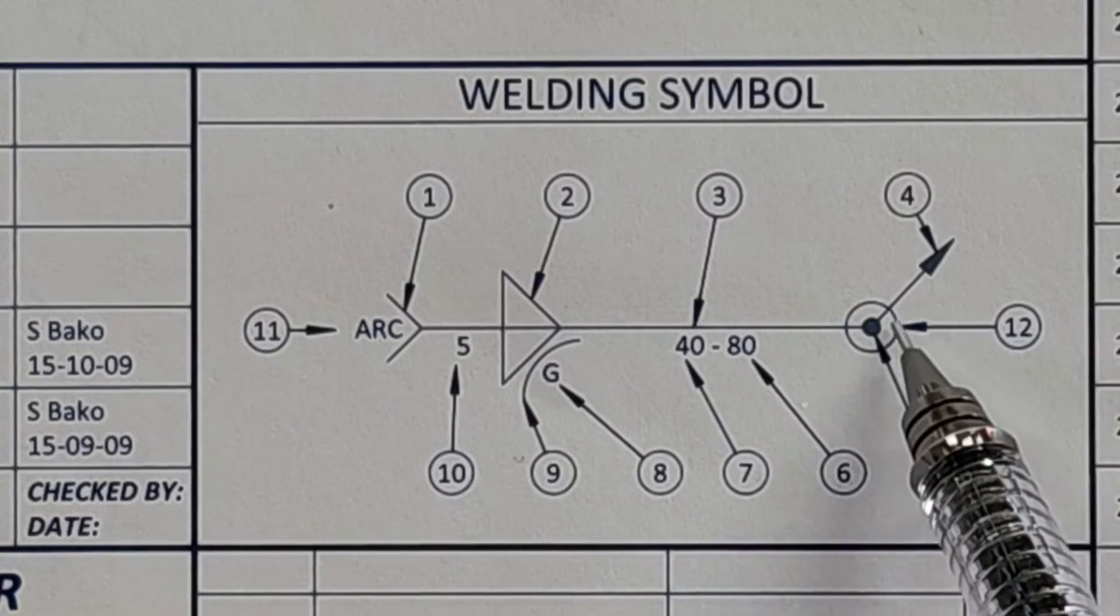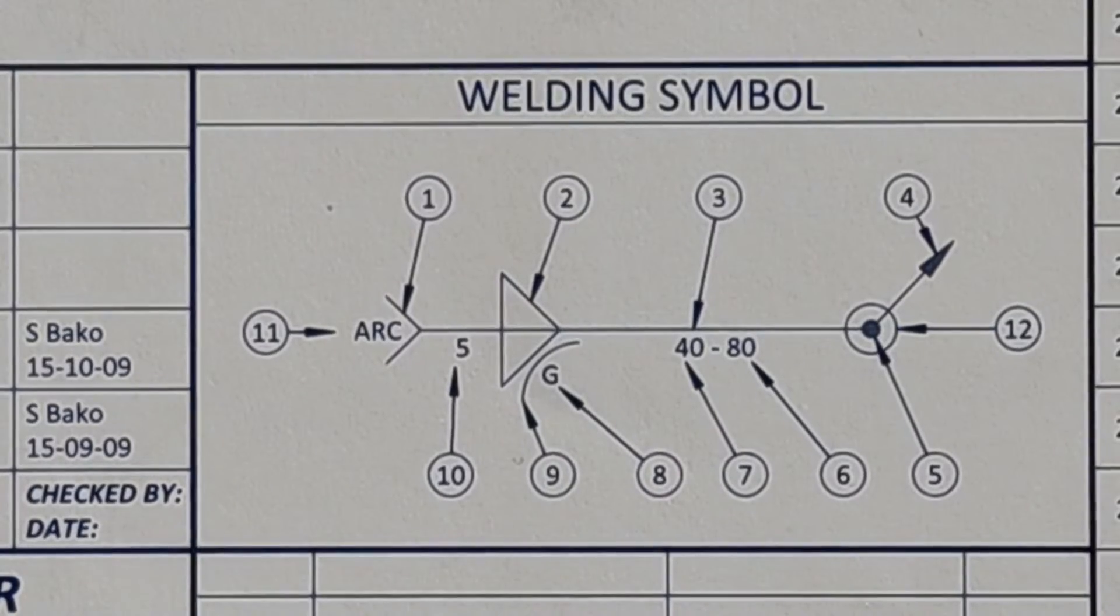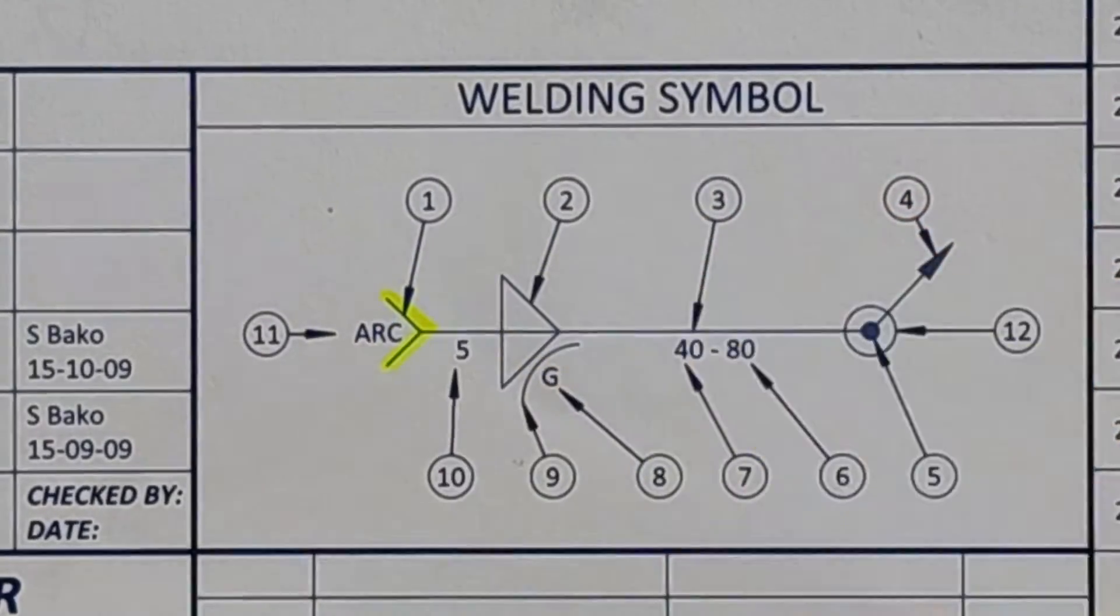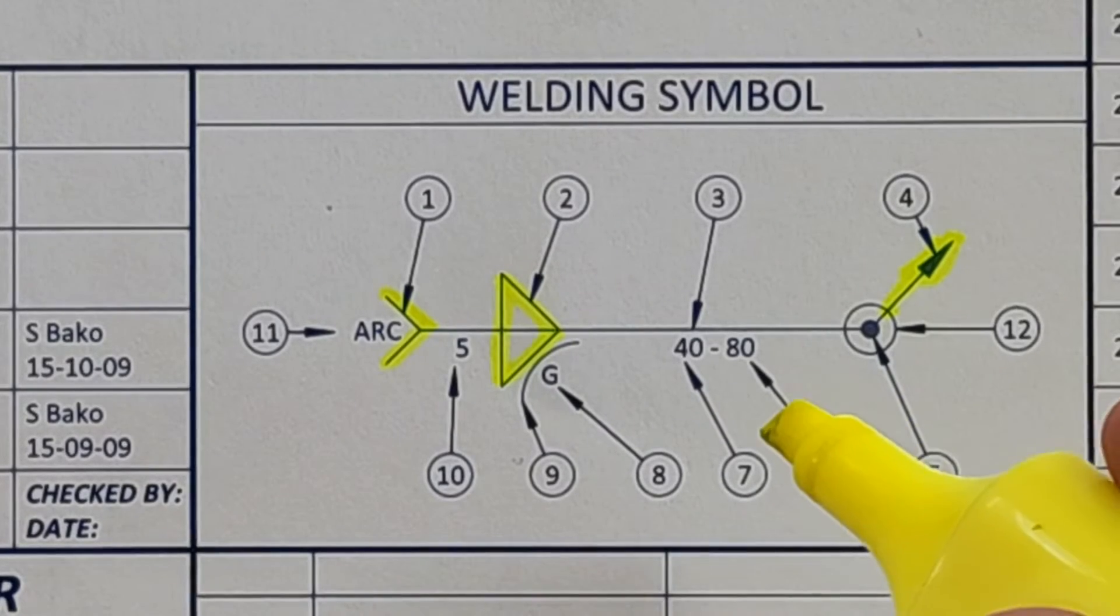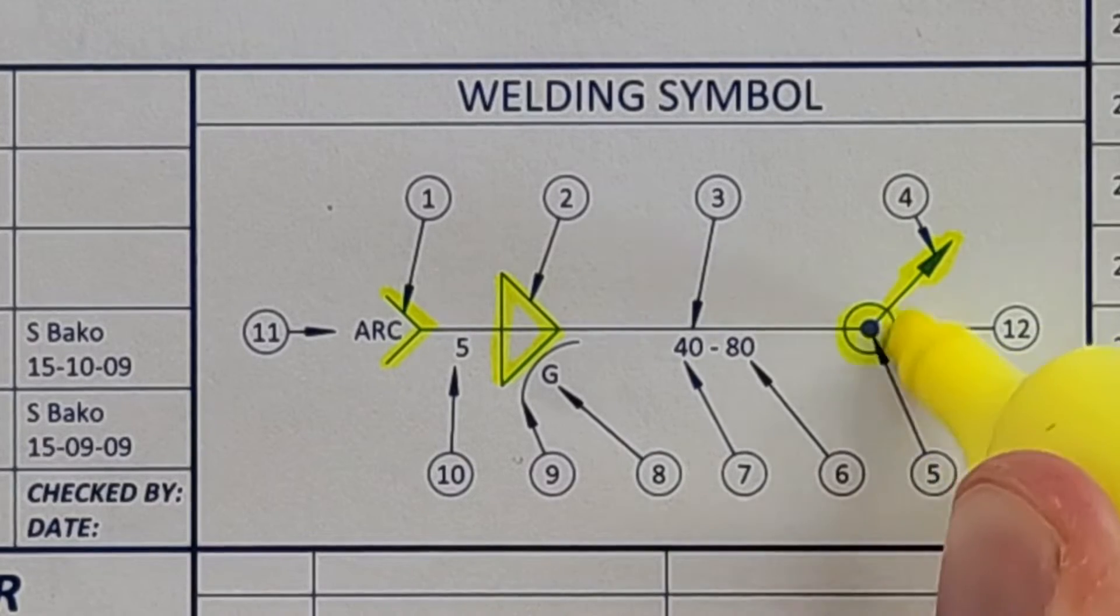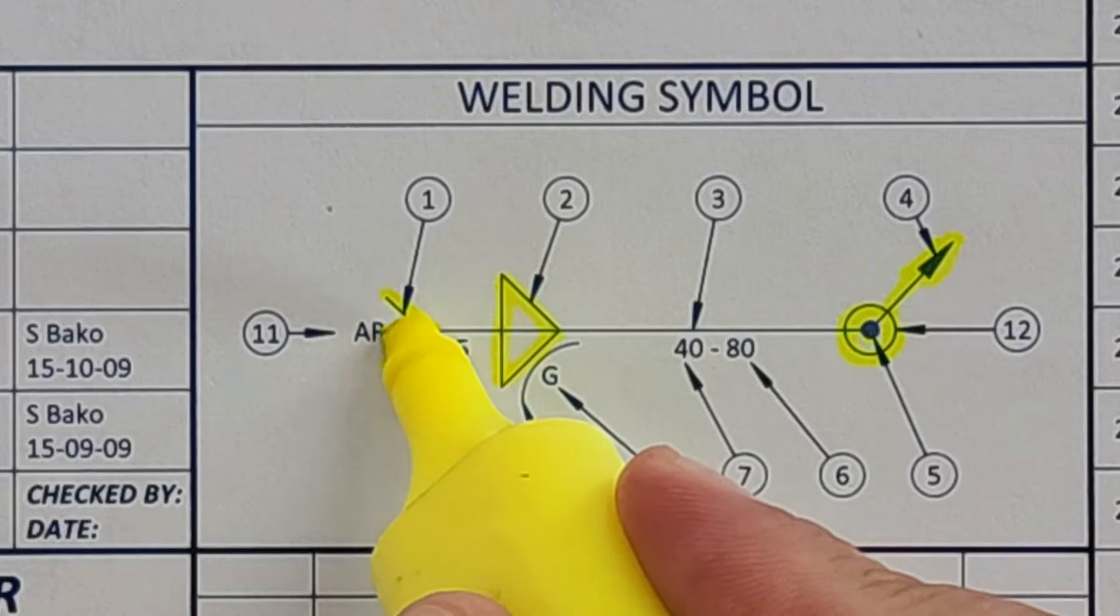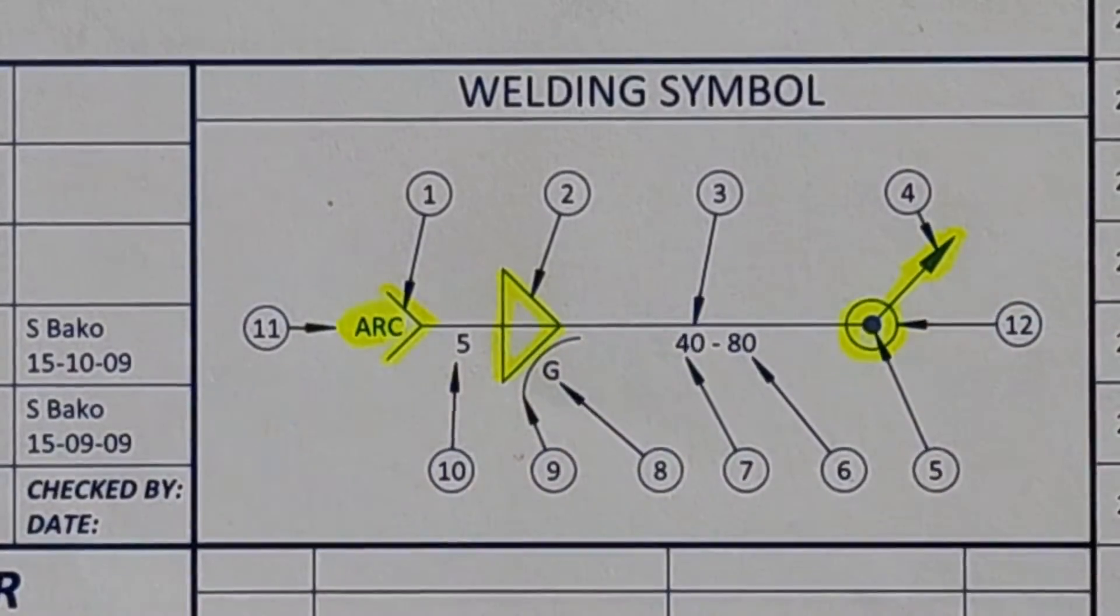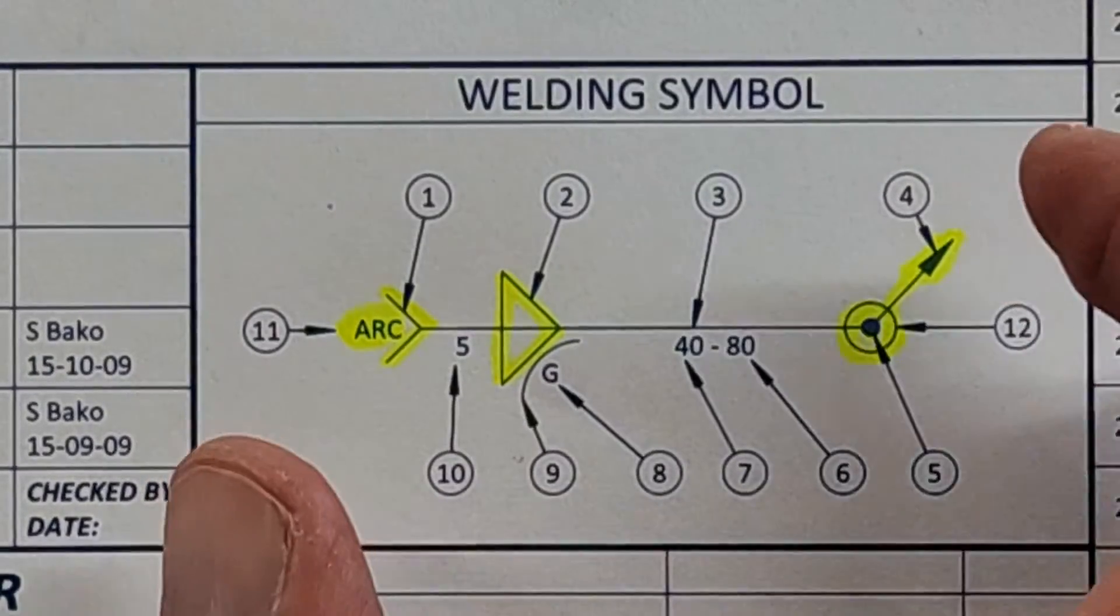And number 12 on this side is that circle there. It's weld all round - rondom swijs. Now, what they've asked many times is number 1, where the tail is. Number 2, where the welding symbol is. Number 4, where the arrow is. Then number 5 is the site symbol, and the weld all round - number 5 and number 12. The site welding symbol and the weld all round, they've asked many times. And then they've also asked here number 11, which is the welding process. You see, learn those, but the others also. Those were common ones that they've asked previously.